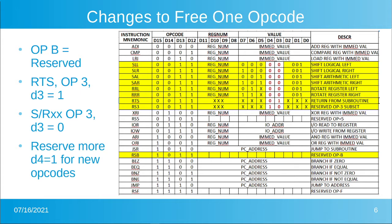Not only did we free up the B location where RTS was, but we've created some more space in what's currently position 3 in the chart for things that don't need those bits — allowing us to pack more single-register or simple operations in there.